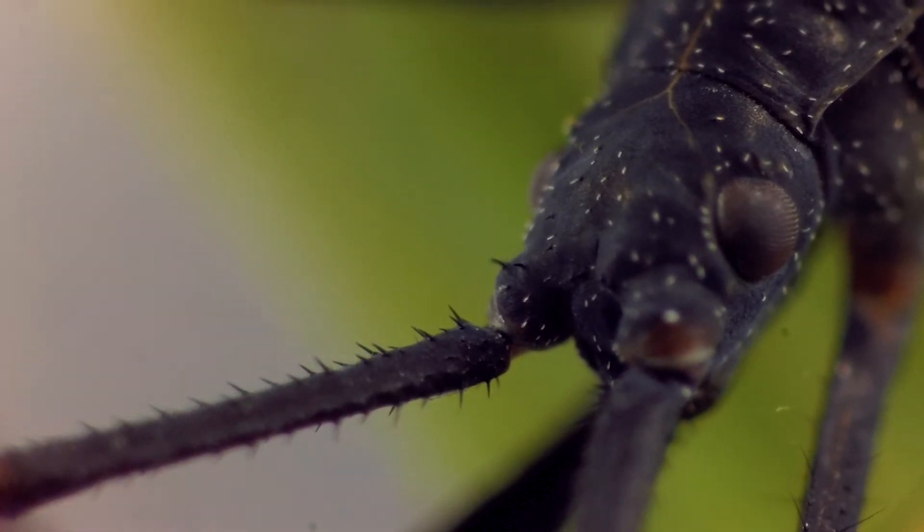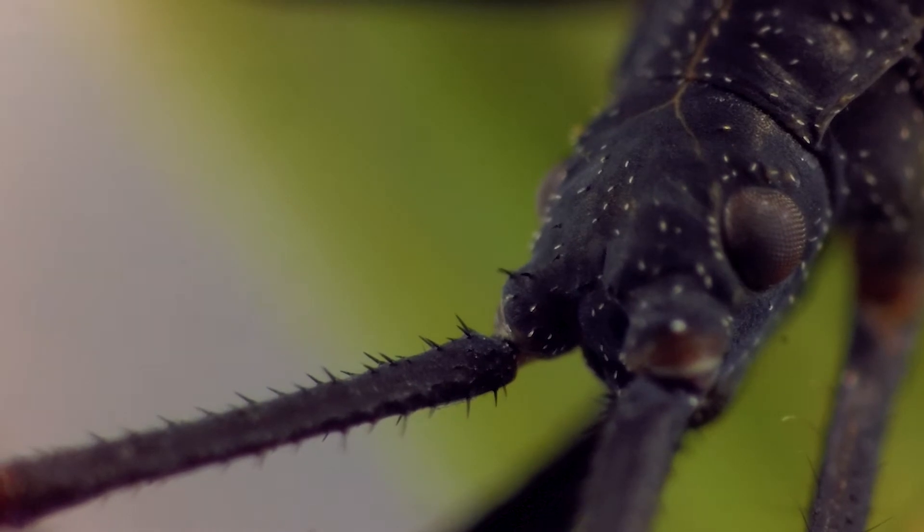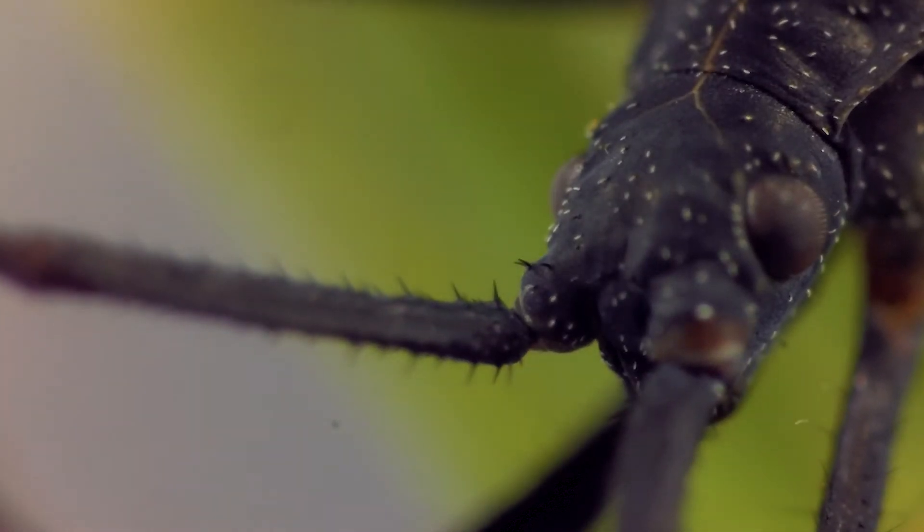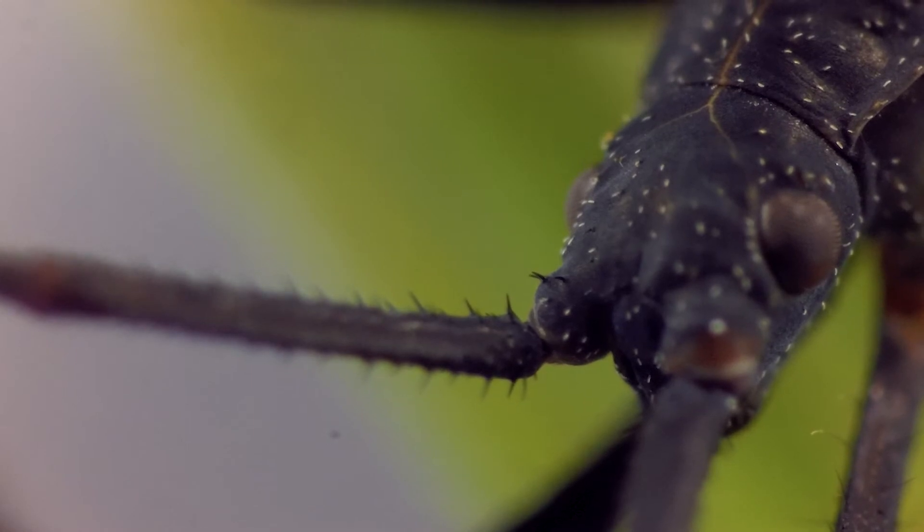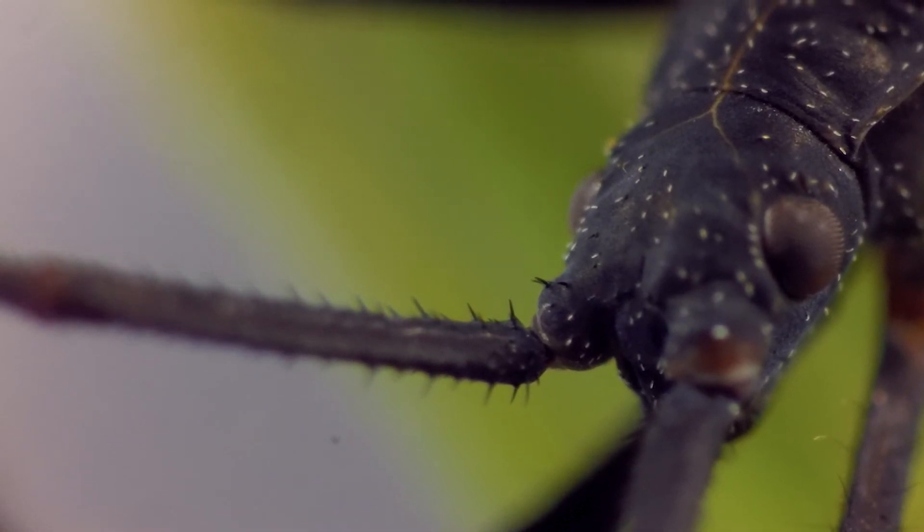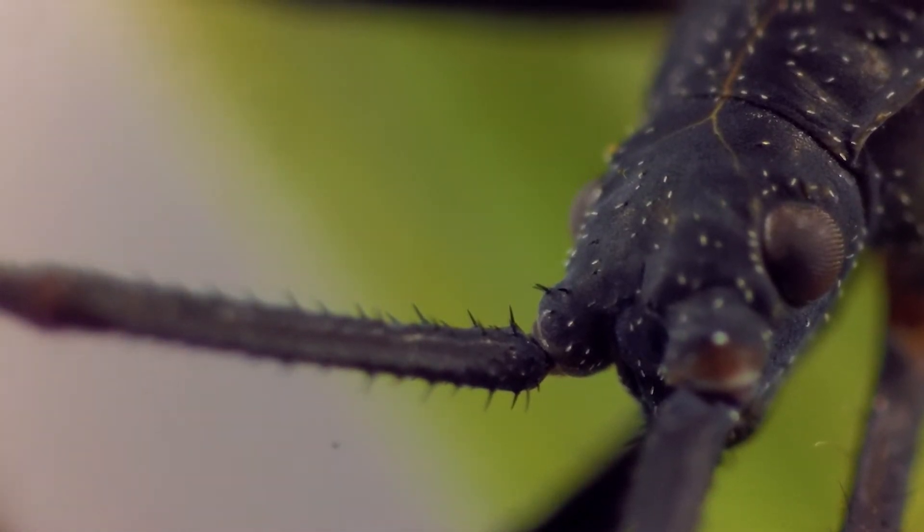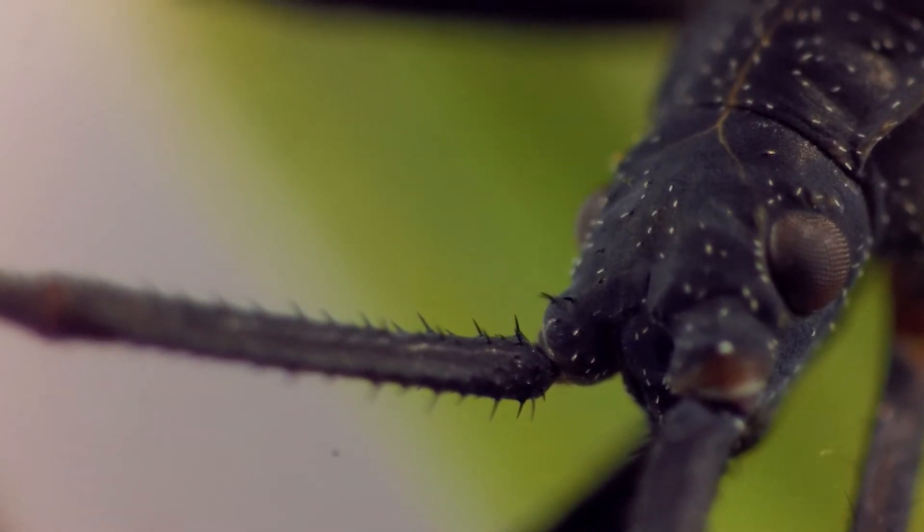It sort of reminds me of the prawns from District Nine. You can sort of make out the structure of the eyeball a little bit and see some of the really tiny little white hairs on its head.